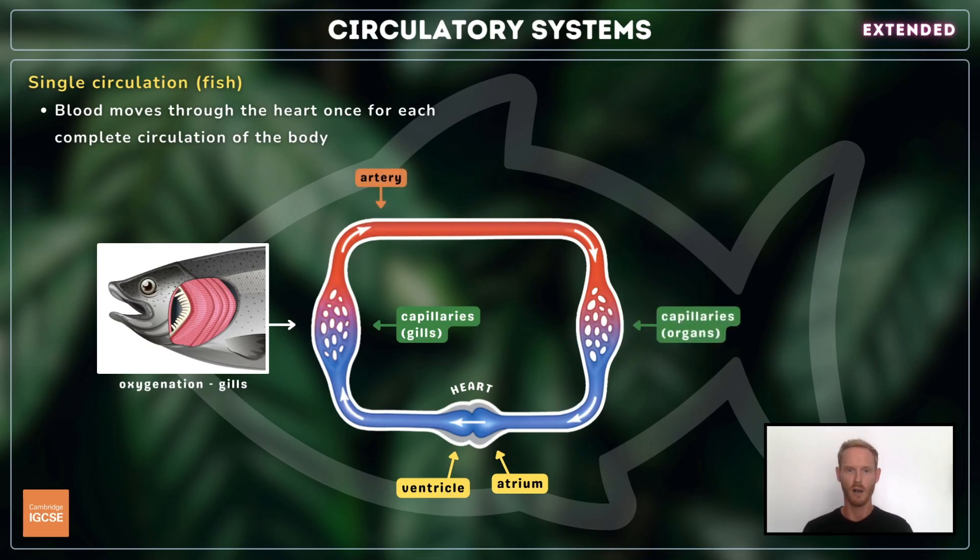It then flows to all parts of the body, distributing oxygen throughout. It's directed back towards the heart in veins which contain valves, and then enters the atrium again so that pressure can be restored. This is known as a single circulation system, as the blood moves through the heart once for each complete circulation of the body.